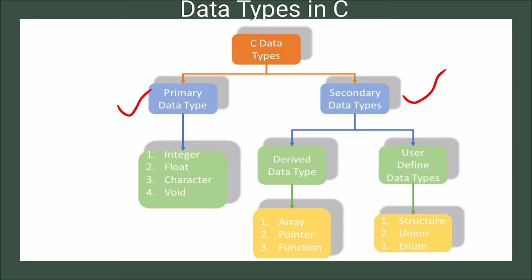Primary data type is again divided into four types: integer, float, character, and void. Secondary data types is divided into two parts: derived data type and user-defined data type.